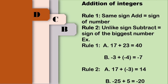For example, rule number one: 17 plus 23. Since the two integers have the same sign, we need to add, then copy the sign of the two numbers, which is positive. That's why we have positive 40 as our answer. For letter B: negative 3 plus negative 4. Since the two integers have the same sign, we need to add, then copy the sign of the two numbers, which is negative. That's why we have negative 7 as our answer.